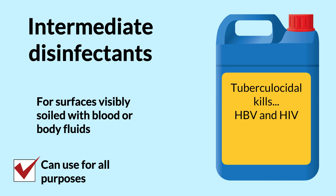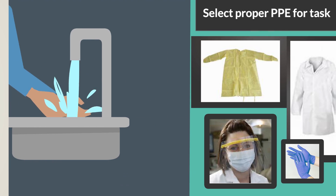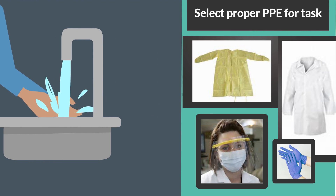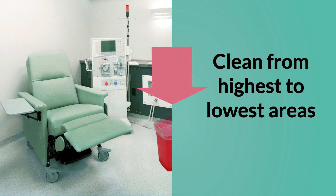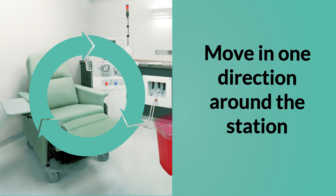For convenience, it may be easier to use the intermediate-level disinfectant for all purposes. When cleaning and disinfecting surfaces without visible blood, follow these guidelines. First, perform hand hygiene and apply personal protective equipment, referred to as PPE. Begin by cleaning from the highest area to lowest and moving from the cleanest area towards the dirtiest. Move in one direction around the dialysis station as you clean. This method helps to reduce the risk of cross-contamination.